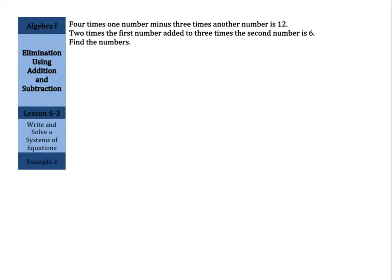Now, to write and solve the systems of equations: 4 times one number minus 3 times another number is 12. 2 times the first number added to 3 times the second number is 6. Find the numbers. Alright, 4 times one number is 4x minus 3 times another number, a different number, so that's minus 3y equals 12. 2 times the first number, the first number was x, so 2x, added to 3 times the second number, 3y, is 6 equals 6. Find the numbers.